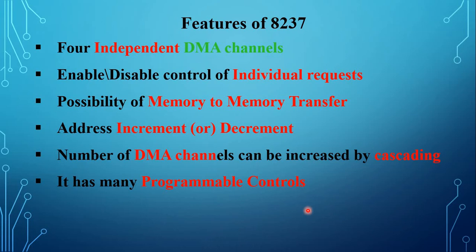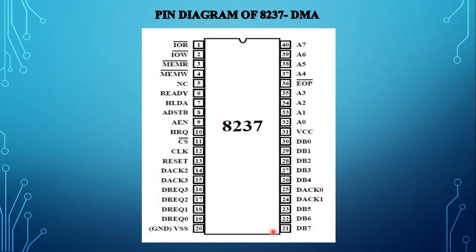This is the pin diagram of the 8237. It is a 40-pin IC chip in a dual in-line package. Pin number 1 is the IO read signal, which is a bidirectional control signal. In slave mode it is an input control signal for reading the control register. In master mode it is an output signal used by the 8237 to access data from the peripheral during DMA read transfer.